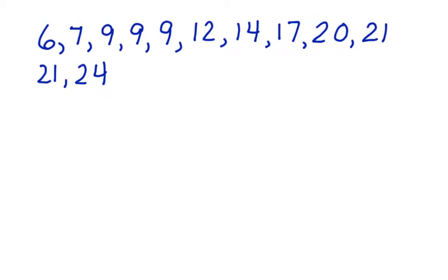There are 12 numbers written here. So we can count from each end: 1, 2, 3, 4, 5, 6 from the left and 1, 2, 3, 4, 5, 6 from the right. And there's an even number of scores, which means that our median is going to be between 12 and 14.